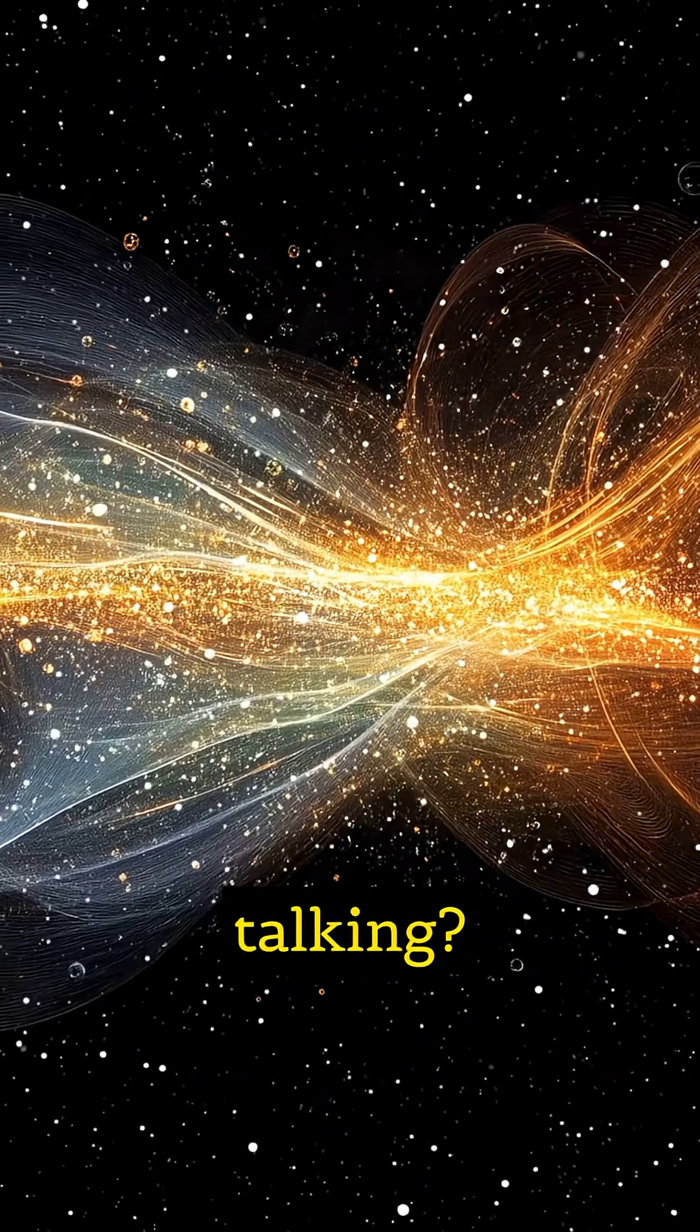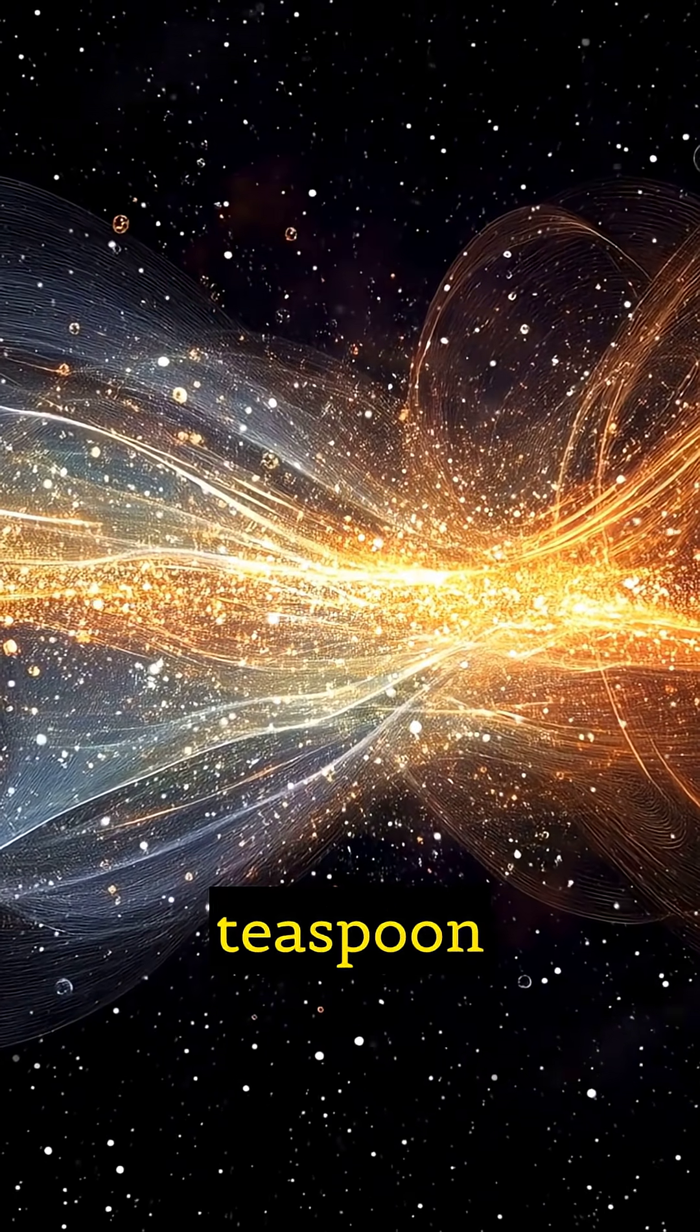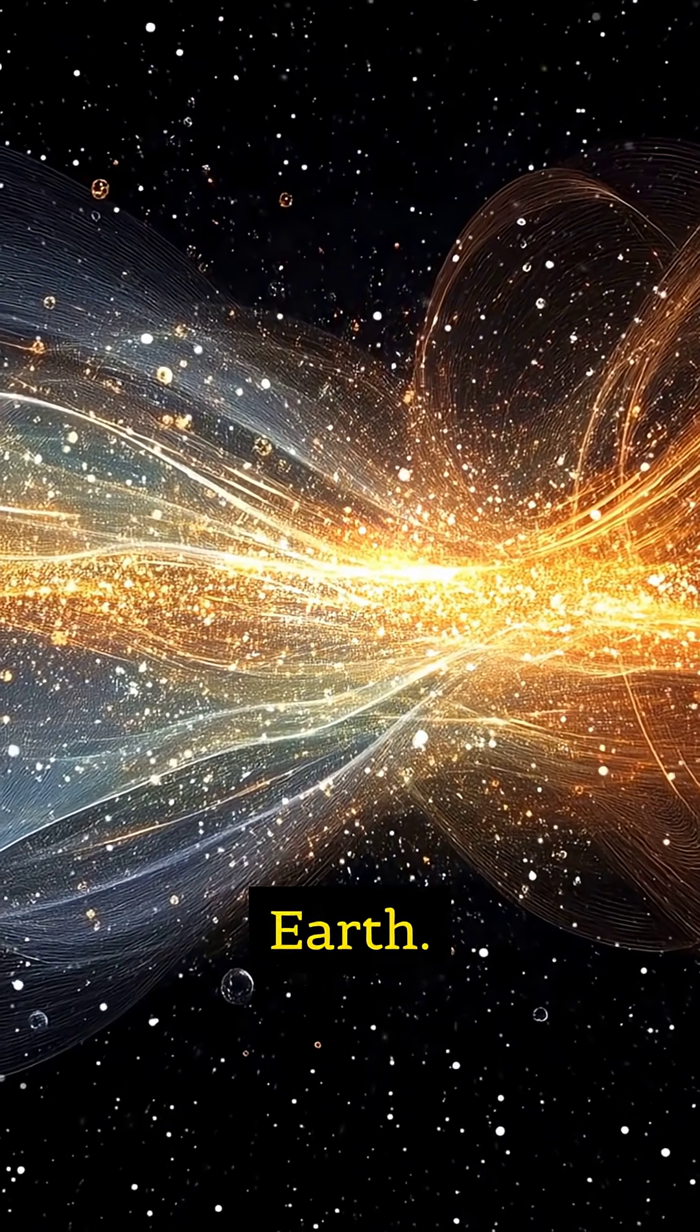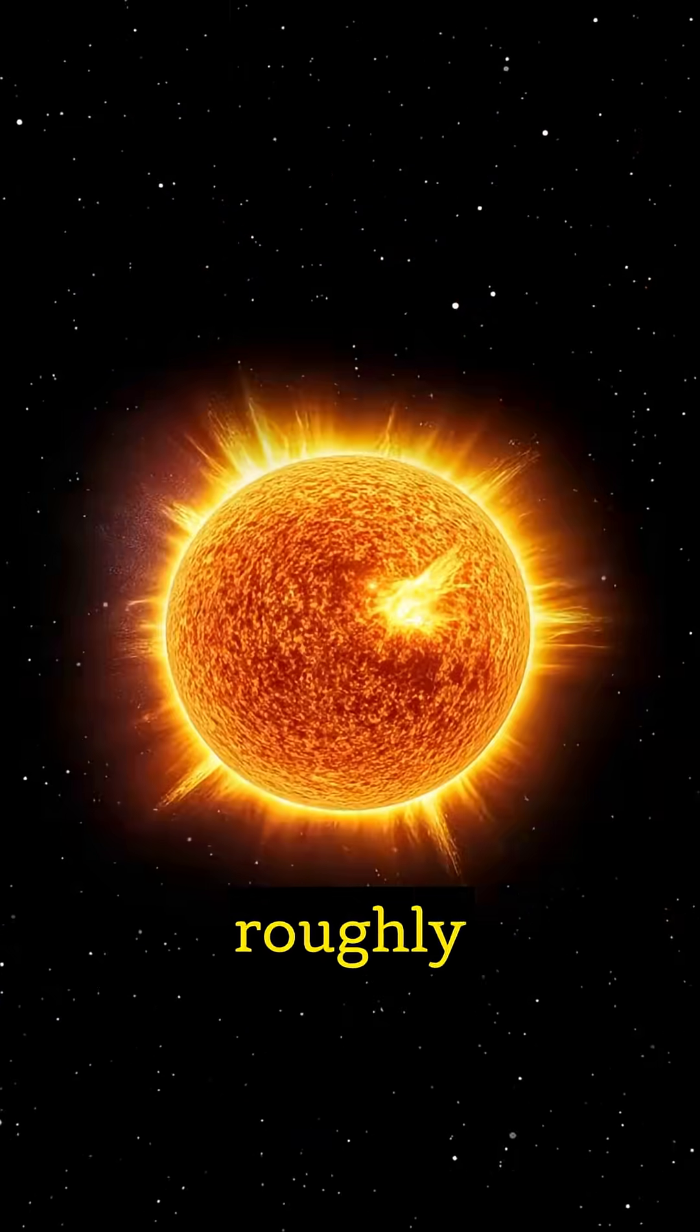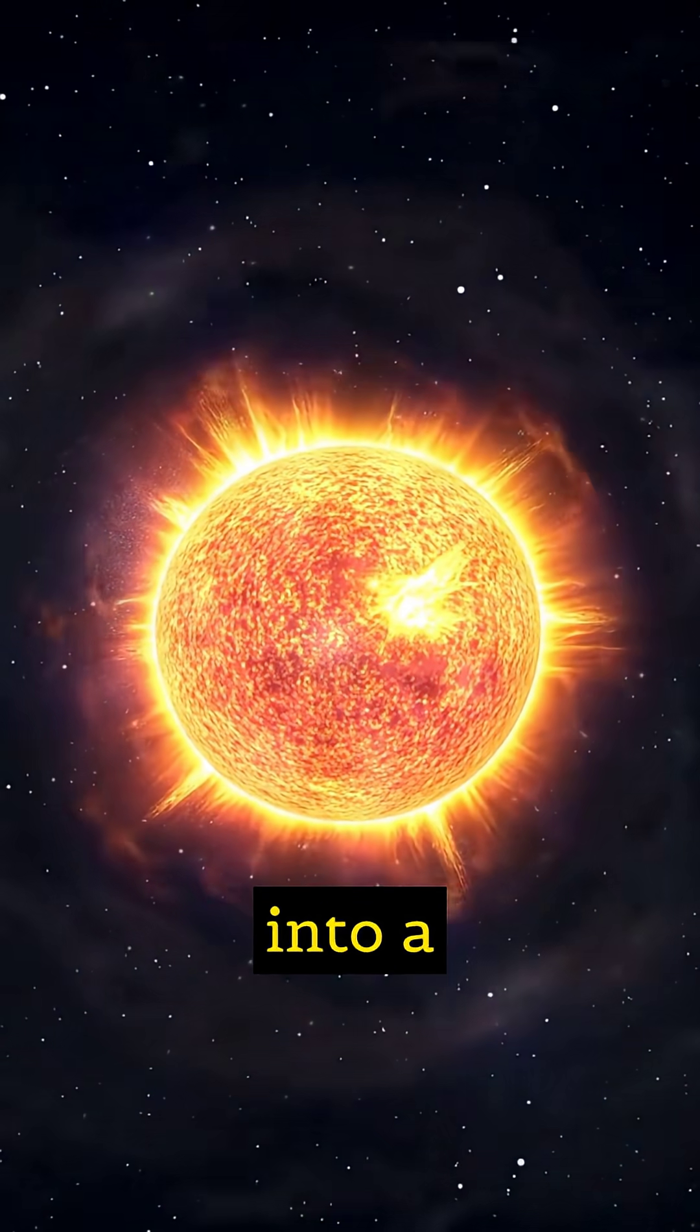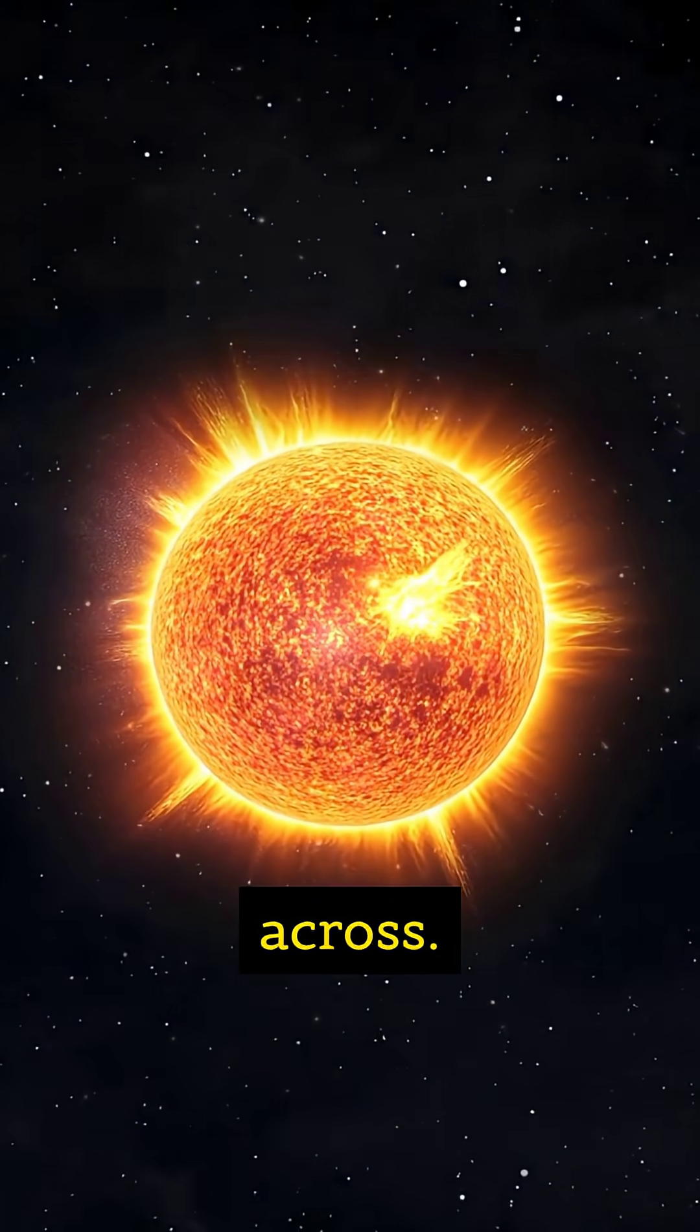How dense are we talking? A single teaspoon of neutron star material would weigh about 6 billion tons here on Earth. That's roughly the weight of Mount Everest. It's like packing the mass of our Sun into a sphere only about 12 miles across.